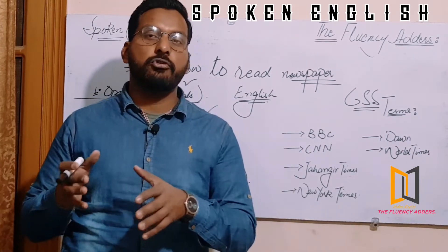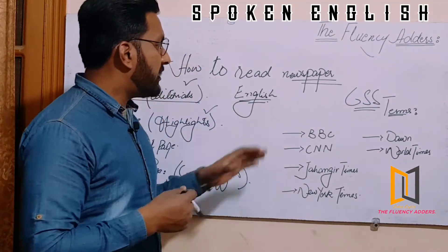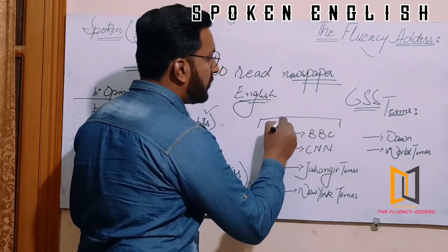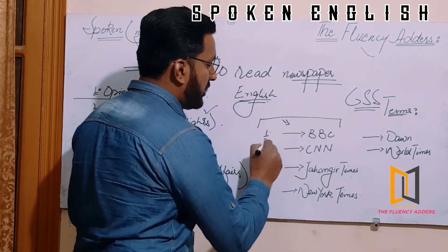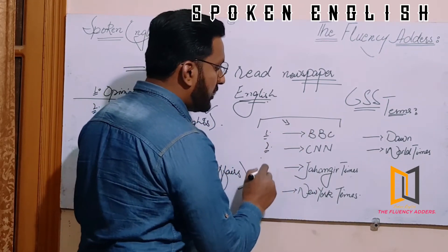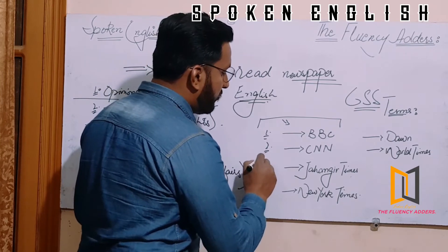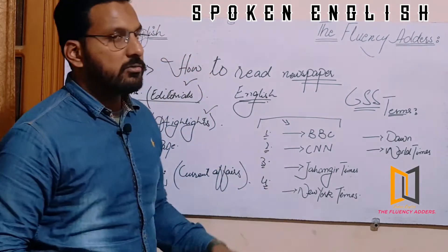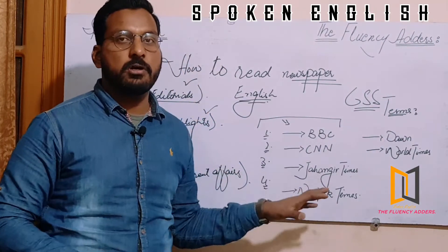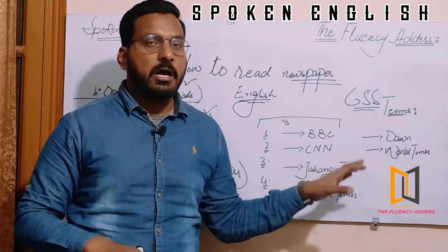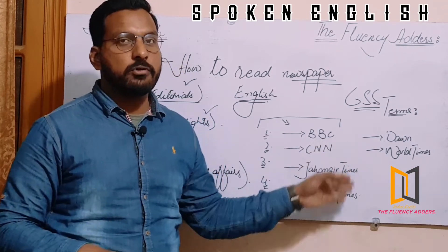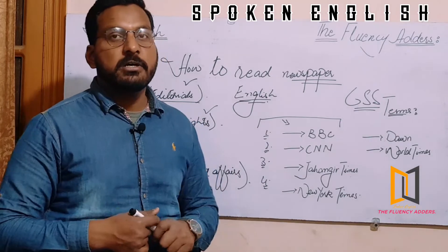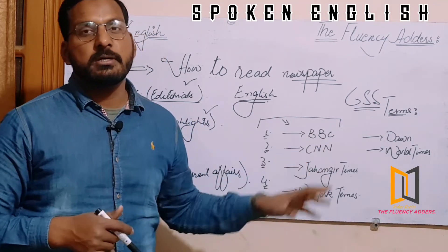We have some major broadcasters and newspapers to consider. Number one is BBC, number two is CNN, number three is Geo (Jahangir), and number four is the New York Times. These are papers that include daily and relevant news. Go for their editorials and highlights of the day — that is how you can read the newspaper efficiently.